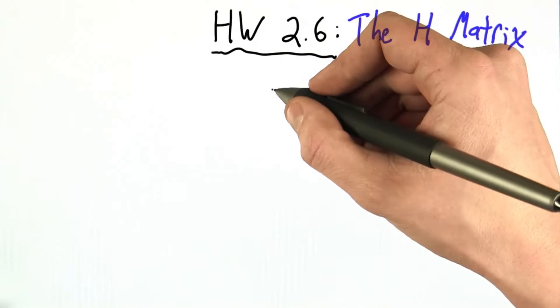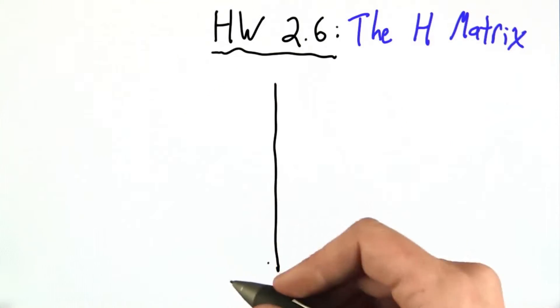And remember, we can only directly measure position and velocity, so that's all we want the H matrix to keep.